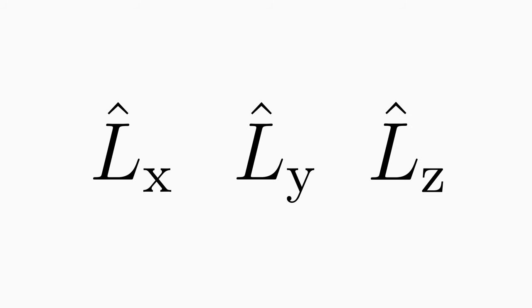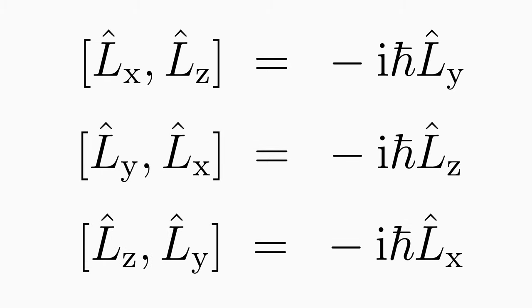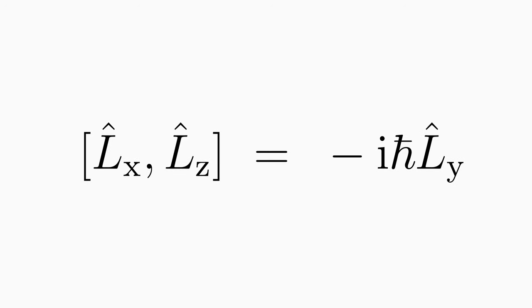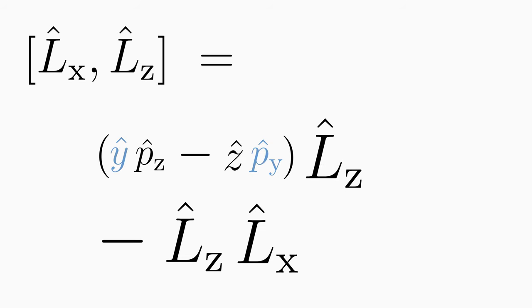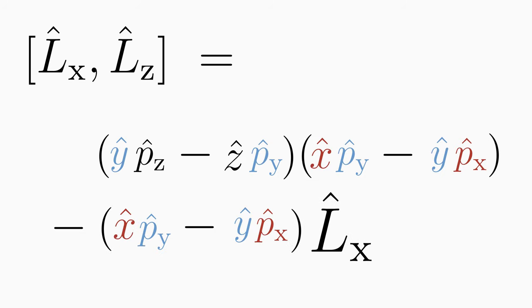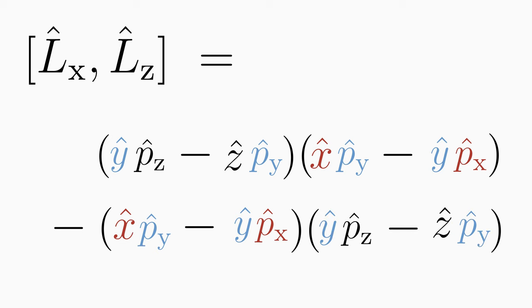So now we can ask: can we know exactly all three angular momentum components of a quantum mechanical particle? Short answer: no. To prove this, we need to calculate the commutators of the angular momentum components. We will find that they are all non-zero, so it is impossible to know two angular momentum components at the same time. Let's look at the commutator of l̂x and l̂z to demonstrate that it is not zero. First, we use the definition of a commutator and insert the determined expressions for the angular momentum operators. Then we multiply out the brackets.